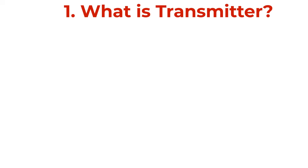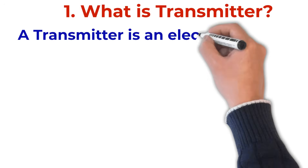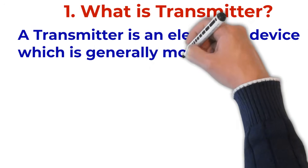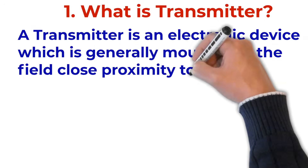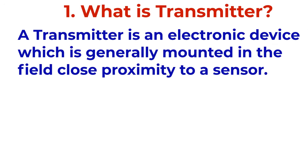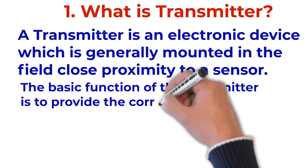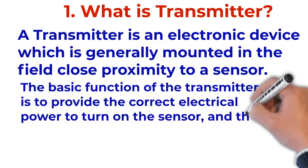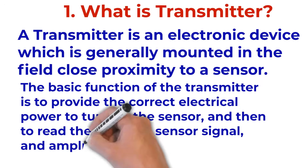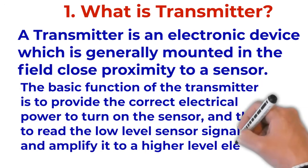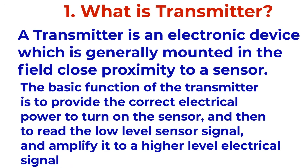You need to give a short definition of a transmitter. A transmitter is an electronic device which is generally mounted in the field and is in close proximity to a sensor. The basic function of the transmitter is to provide the correct electrical power to turn on the sensor, read the low-level sensor signal, amplify it to a higher-level electrical signal, and send that signal a long distance to a controller or readout device.